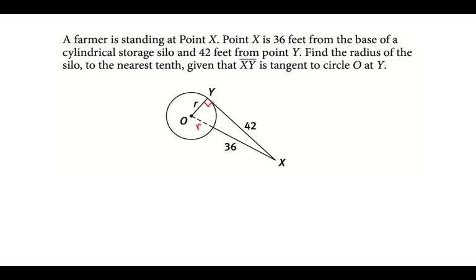So we can use Pythagorean Theorem to solve for the radius. So remember, Pythagorean Theorem is a squared plus b squared equal to c squared when your right triangle has legs a and b and a hypotenuse of c.